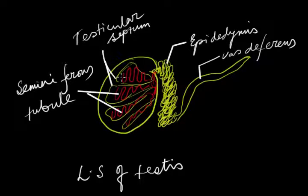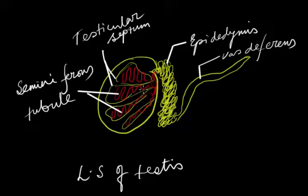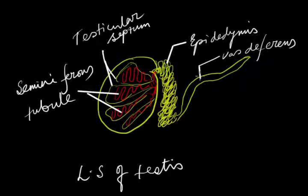These compartments contain a tubular structure which is a very important structure of testes, known as the seminiferous tubule. The seminiferous tubule unites at the posterior part of the testes, which is known as the rete testis, and finally leads into a coil-like structure outside the testes called the epididymis. The epididymis then leads into a fine tubular structure called the vas deferens.